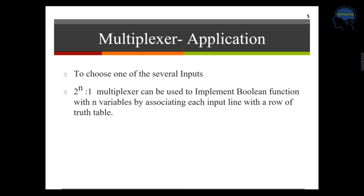A multiplexer can be used to implement a Boolean function with N variables by associating each input line with a row of the truth table. Hope this is clear for everyone. If you find this useful, please share it with others. Thank you.